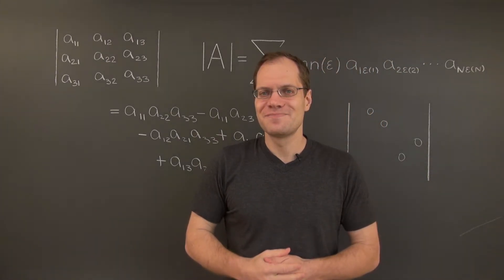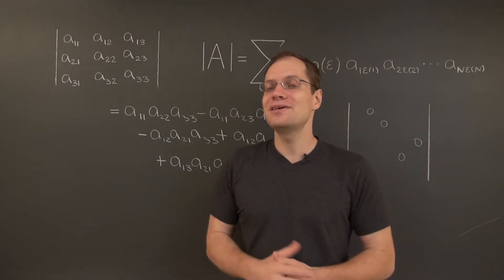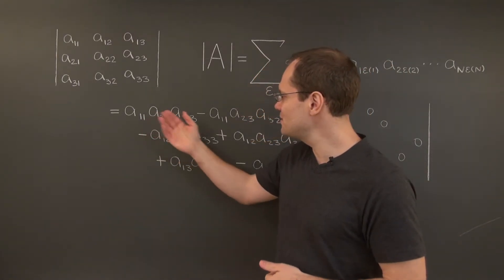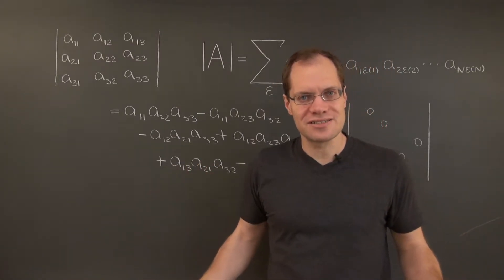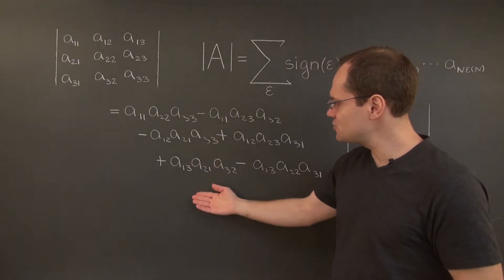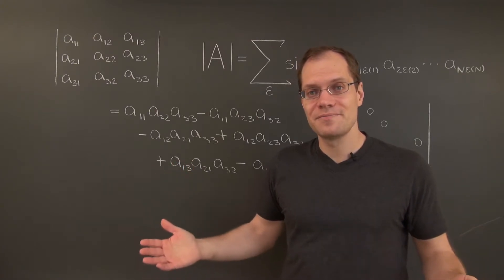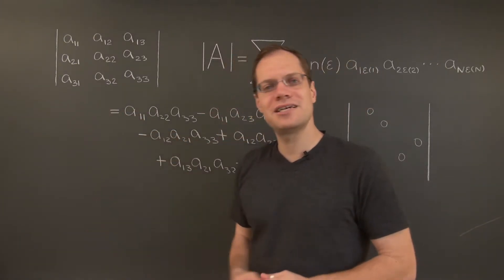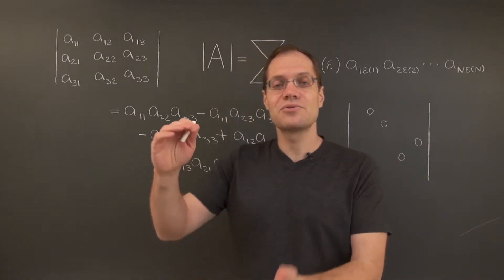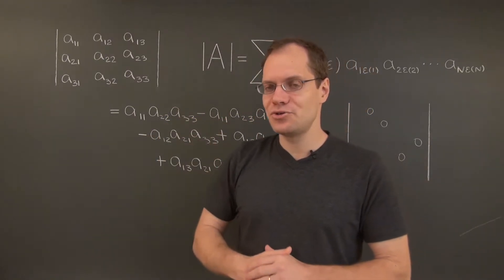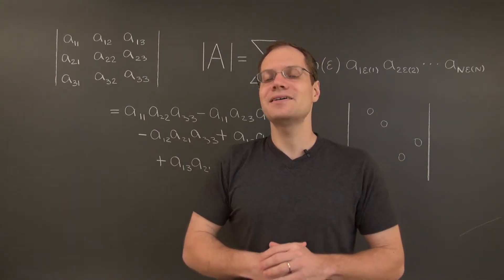What about the columns? Well, the columns are totally different — they are completely scrambled, except in the first term. The columns correspond to permutations, and that's why we have 6 terms: because there are 6 possible permutations of the numbers 1, 2, and 3. Let me write each of the permutations down — you should pause the video, write down all the possible permutations of 1, 2, and 3, find a system for doing that, and then come back and check with us.